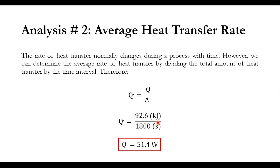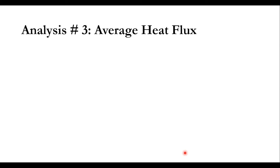Kilojoule per second is equal to kilowatt. Multiplying by 1000 gives the answer in watts, which is 51.4 watt.